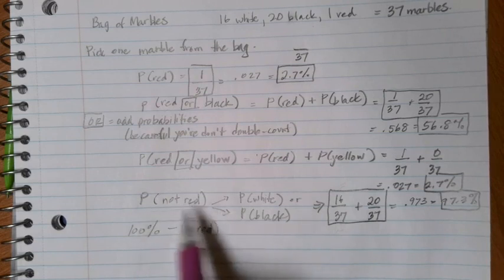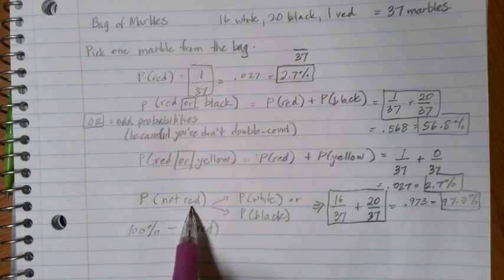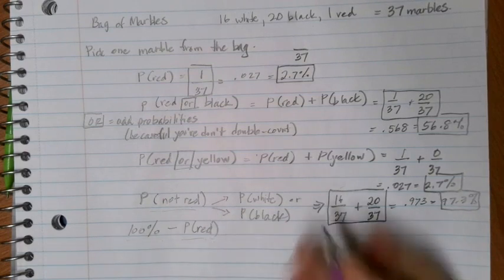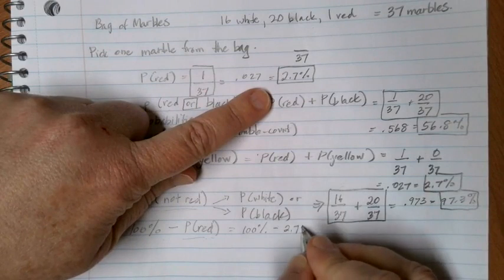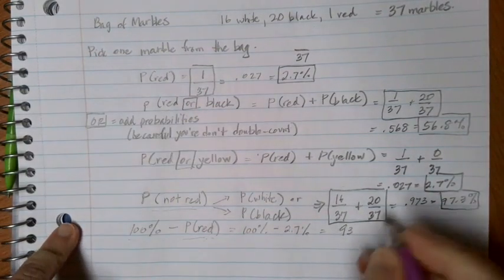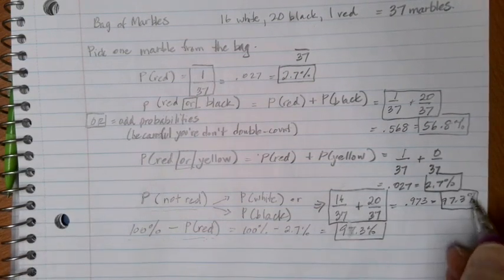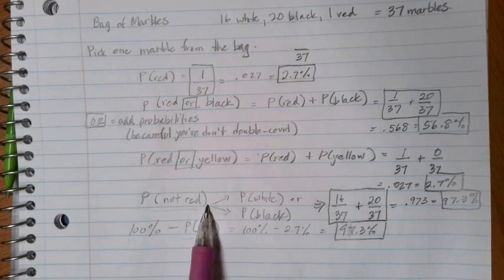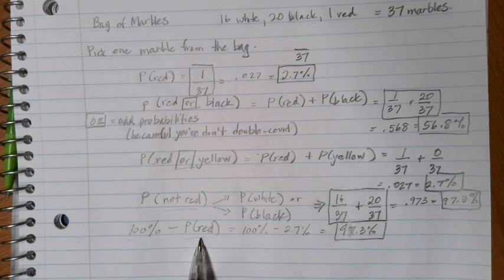The probability of picking 'not red' and the probability of picking red together have to make a total of 100%, because those are the only options — it's either red or it's not red. So if I want to find the probability of something not red, I can take 100% and subtract the probability of it being red, which was 2.7%. If I subtract those, I end up with 97.3%, which is the same answer. So I can either calculate directly by looking at my possibilities, or I can subtract the red probability from 100% and end up with the same value.